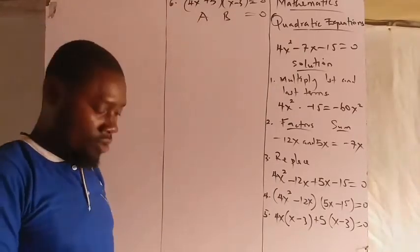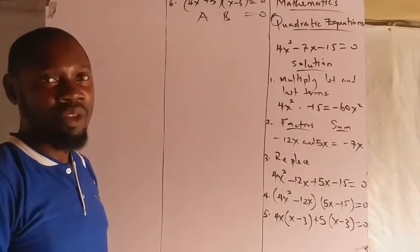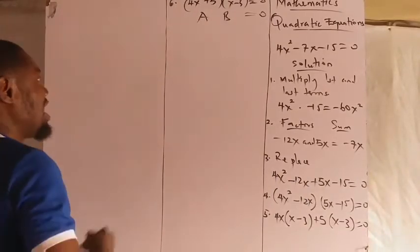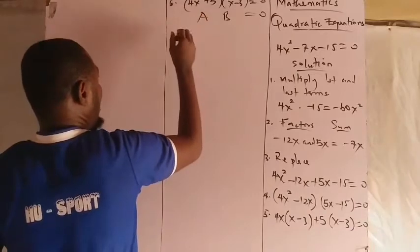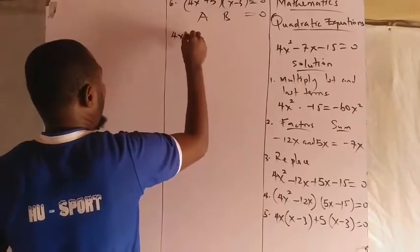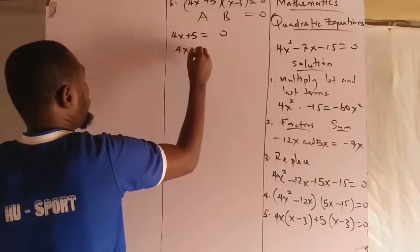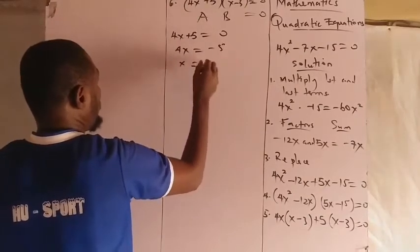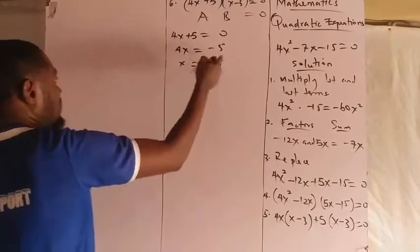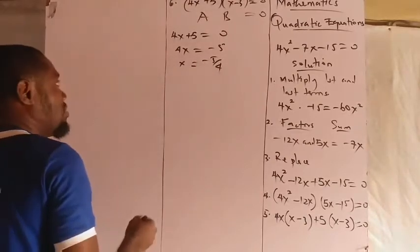Right now we have 4x + 5 = 0, which implies that 4x will be equal to -5. Then x alone will be -5/4 if we divide both sides by 4. That is the result.